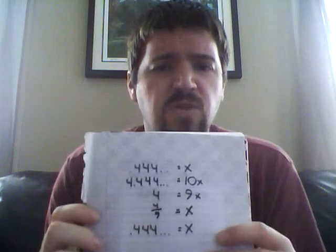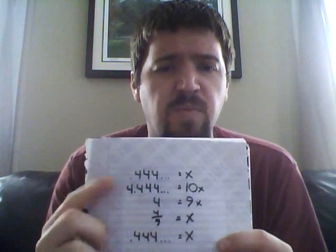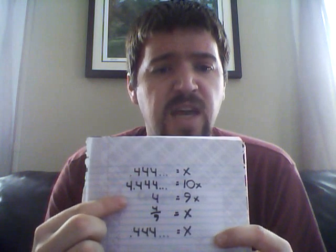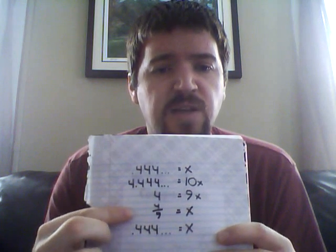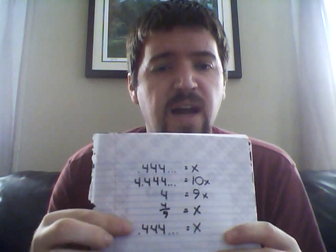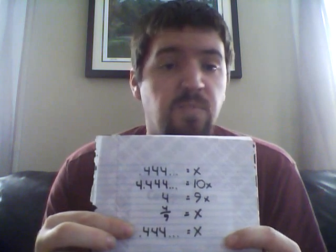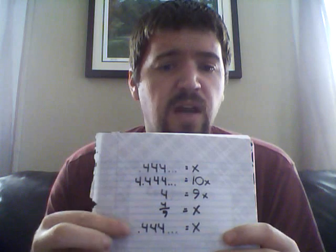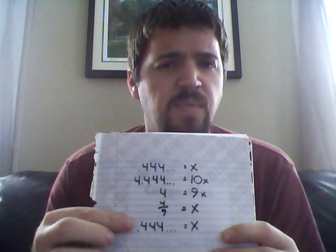0.4 repeating — because I like the math, I think it looks nice. Let's see what happens when we do this with 0.4 repeating. It equals x. You multiply both sides by 10. You subtract the x. You have 4 divided by 9, and that gives you 0.4 repeating. And if you punch this into a calculator, this is exactly what you'll get.